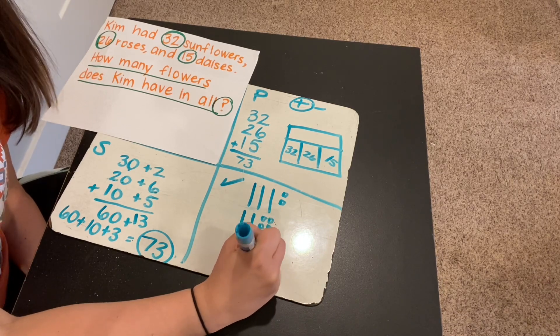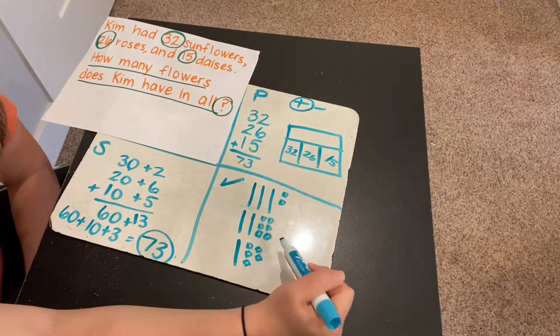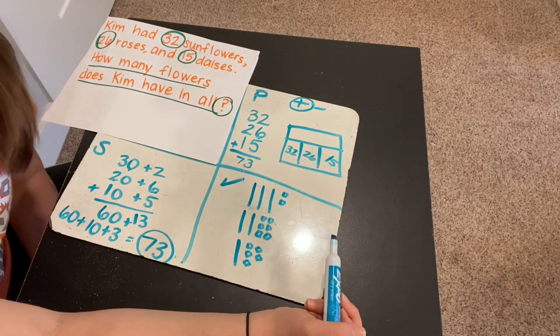And then 15. 10, 11, 12, 13, 14, 15. And now I just need to count these all together. I'm going to count my 10s first and then my 1s.